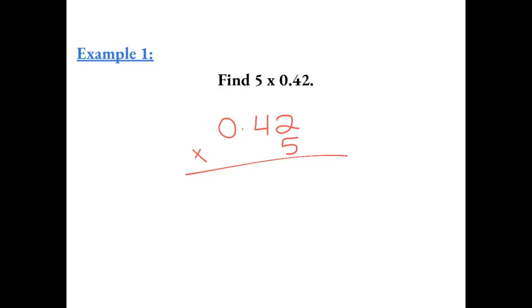5 times 2 gives us 10. 5 times 4 gives us 20, plus 1 gives us 21. 5 times 0 is 0, plus 2 is 2.